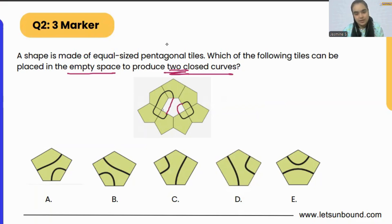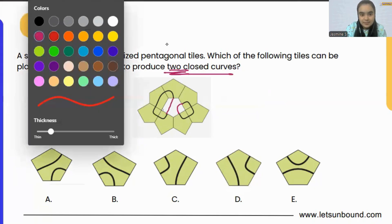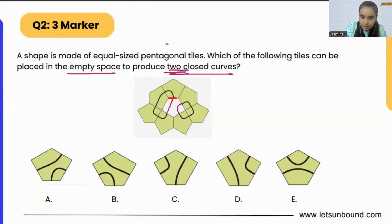Now, if we see the middle part, the missing part is also a pentagon. And in our options as well, we are having pentagons only, but they are in a different position. They are upside down. Correct?